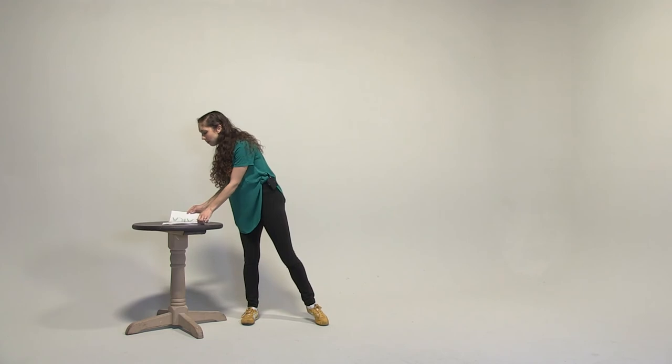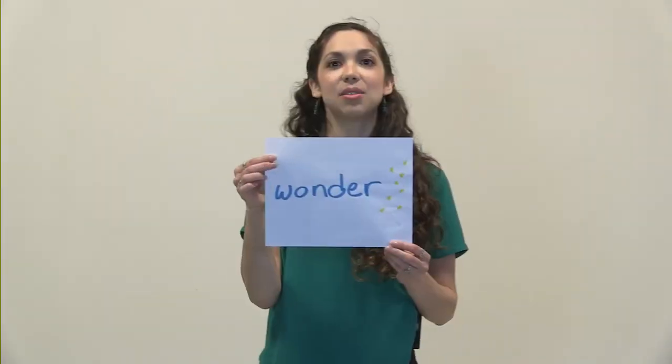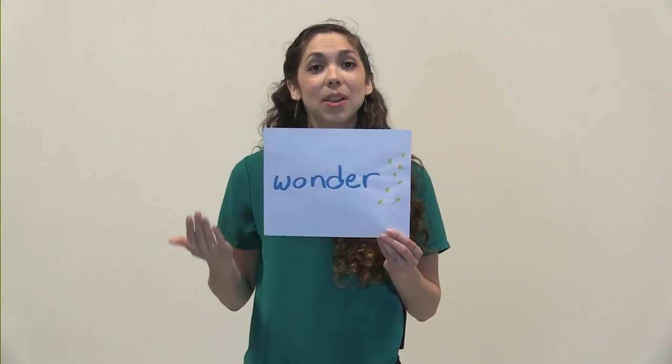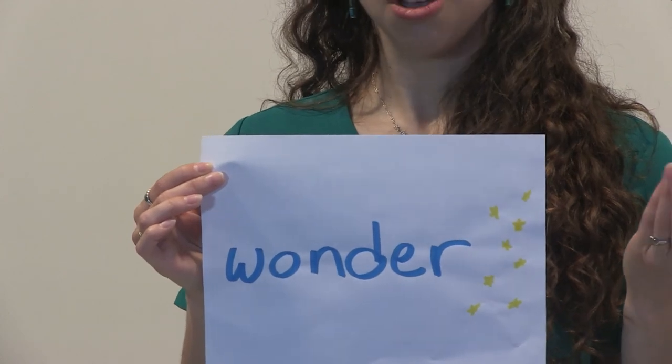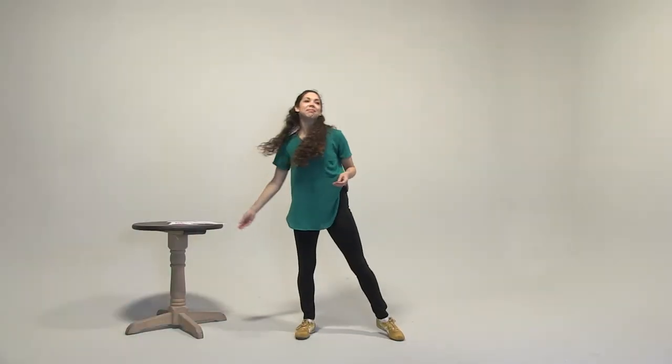Thank you so much for doing that really fun activity with me. Now we only spelled one word today — we spelled our names — but there are so many more words in the world, in English and in every other language. You could spell your name in a different language too. My favorite word is wonder — I could do a dance spelling my favorite word. Do you have a favorite word? You could make a dance to spell that. There are so many ideas to play with. I'm Kiara with Moving Minds Dance, and today we wrote words with our bodies. You can do that wherever you are with new words and more words — you could even write a whole sentence. Come back and dance with me again soon.